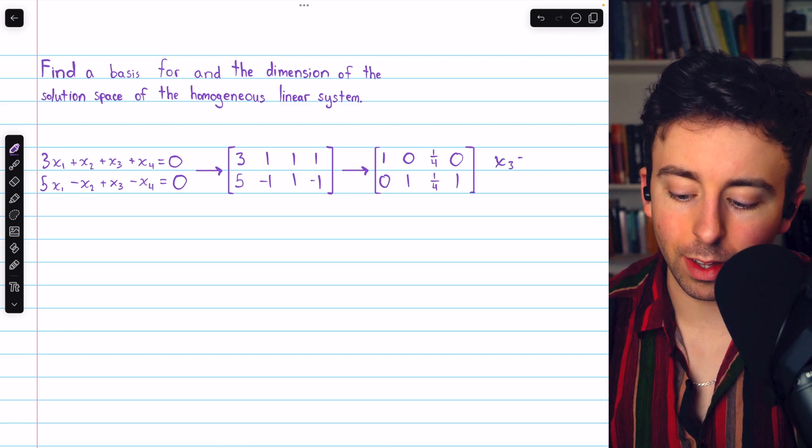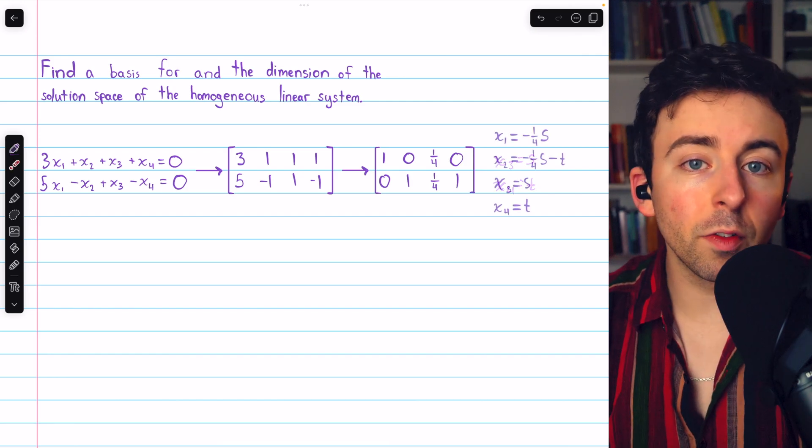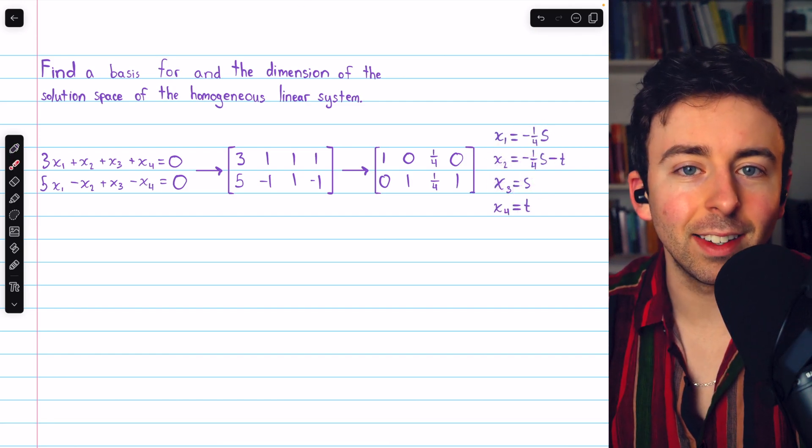We could say that x3 is equal to a parameter s and x4 is equal to t. And from there, we're able to express the rest of the unknowns in terms of s and t as well.